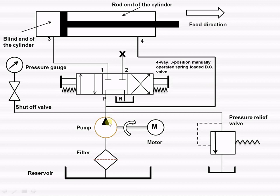In the given neutral position, when the motor drives the pump, the fluid enters into the filter, gets filtered, and is pumped to port P, and then back to the reservoir. This is the neutral or block position — nothing will happen in this particular case.